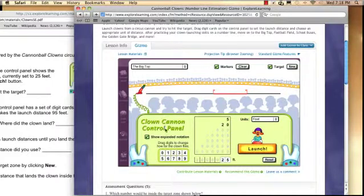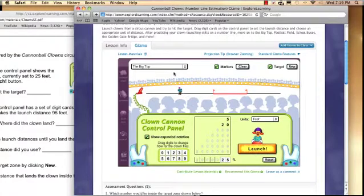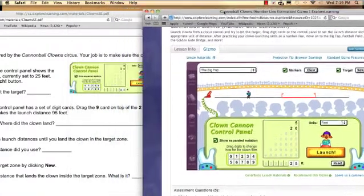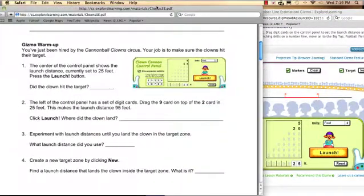Clown cannon control panel. I've never used this before, but let's check it out. Show expanded notation. Drag the digits to change how far the clown flies. Alright. Right now, 20 feet plus 5 feet gives us 25 feet. So, looks like the launcher is there. Here's the control. And let's hit launch, as the directions say on the student exploration sheet. Bam. Okay. So, let's go back to our question. Nice sound effects. Did the clown hit the target? Answer: No. If you don't know the answer, you can always check your teacher's guide answer key.